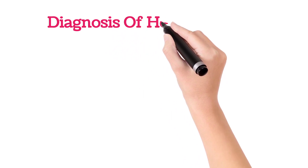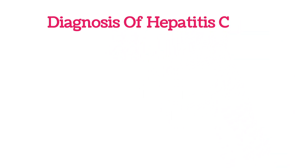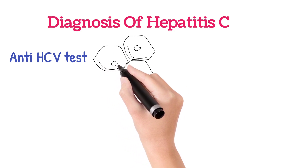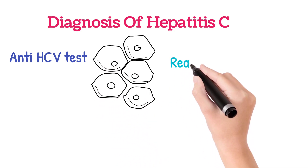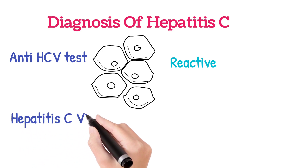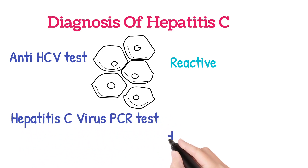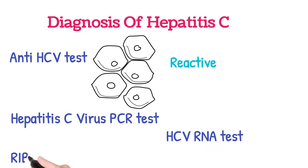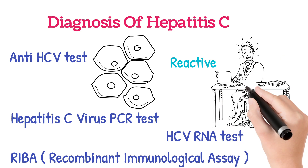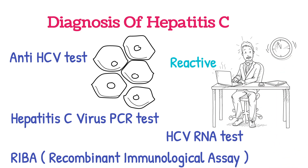Coming to the diagnosis, in the initial stages the doctor suggests an anti-HCV test. If the anti-HCV test is positive or reactive, it means there are antibodies in the blood, which suggests Hepatitis C infection. To confirm the diagnosis, the doctor may advise additional blood tests like Hepatitis C PCR (polymerase chain reaction test), Hepatitis C virus RNA test, and recombinant immunoassay. By confirming these tests, the doctor will come to a conclusion about the Hepatitis C viral infection, and treatment will vary accordingly.